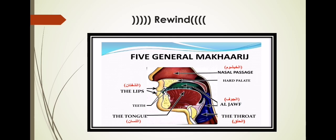Each general Makhraj is further divided into specific Makharij so we can understand exactly where each letter originates. For example, from Al-Halq there are six letters. Rather than all coming from the same place, they are divided into three specific areas: Hamza and Ha from the deepest part, Ayn and Ha from the middle part, and Ghain and Kha from the upper part.